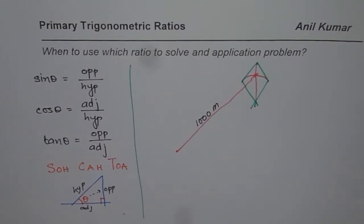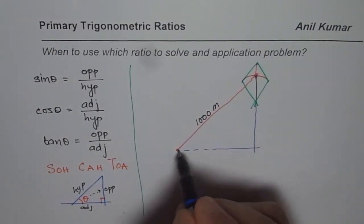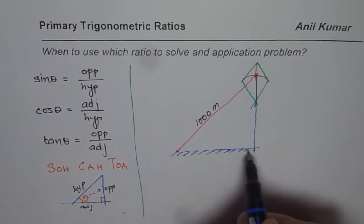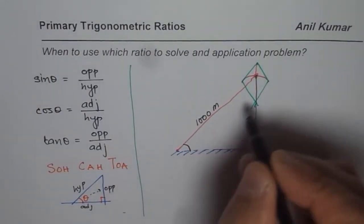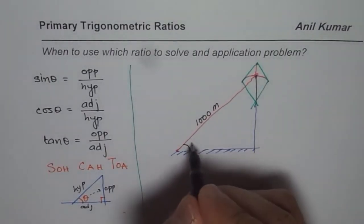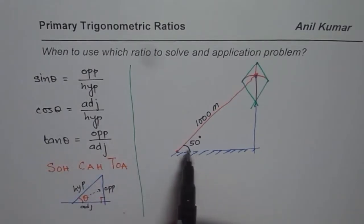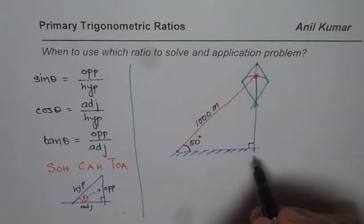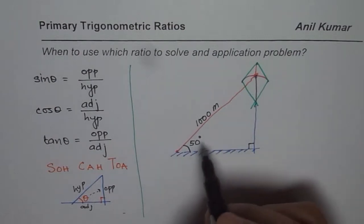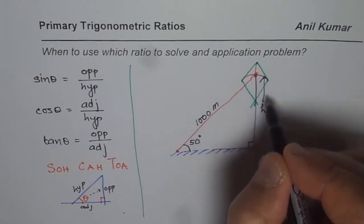We want to find the height from the ground level. We can estimate that the angle of elevation from the ground point to the kite is approximately 50 degrees. That is the theta — the angle of elevation in this case. The perpendicular height and the thread form a right triangle.